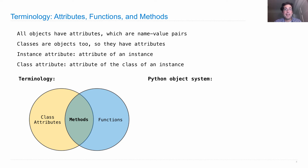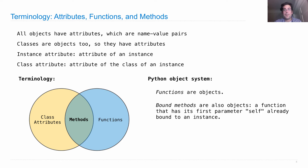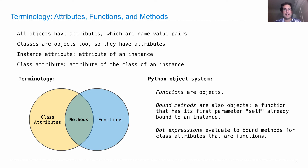Within the Python object system, functions are objects because they're just regular values. Bound methods are slightly different. A bound method is also an object — it acts like a function, but what it is is a function where the first parameter, self, has already been bound to an instance. The first argument is already passed in, and when we call a bound method we only have to pass in the rest of the arguments.